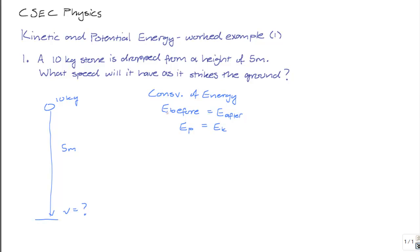So, before being dropped, the stone had potential energy because of its location in a gravitational field. We're assuming this is the Earth's gravitational field. As it's about to strike the ground, it has kinetic energy because it's now moving with a velocity, V.